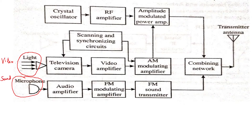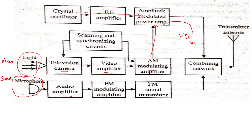The video input is the light signal — the picture scanned by the TV camera. The output video signal is amplified, then AM modulation is performed because we want a vestigial sideband. A carrier is amplitude modulated to produce the vestigial sideband video signal. For the sound signal, the microphone output is amplified and then frequency modulated — a carrier is frequency modulated according to the sound signal.